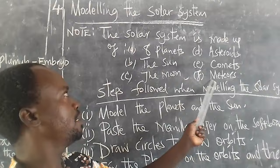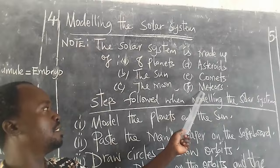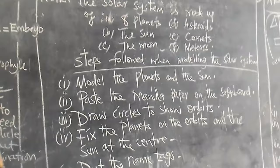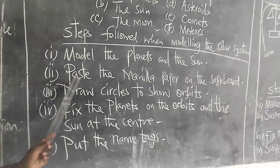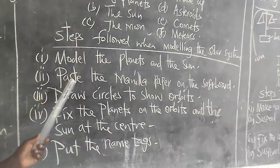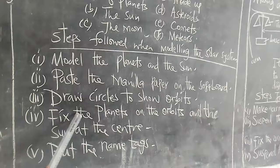The components of the solar system: eight planets, the sun, the moon, asteroids, comets, and meteors. Steps followed when modeling the solar system: model the planets and the sun; paste the manila paper on the ball; draw circles to show orbits; fix the planets on their orbits with the sun at the center.